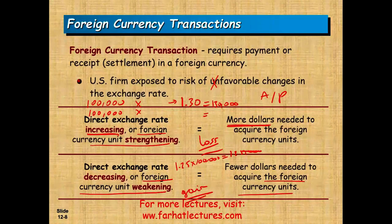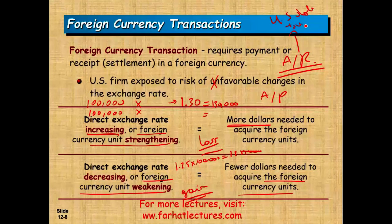This relationship is the opposite if you have a receivable. If you have an accounts receivable in foreign currency, you want the U.S. dollar to weaken — because when you receive the euros, if the U.S. dollar is cheaper you can buy more U.S. dollars with them. So with a receivable, you want your home currency to go down. If you have a payable, you want your home currency to strengthen, meaning the other currency goes down.